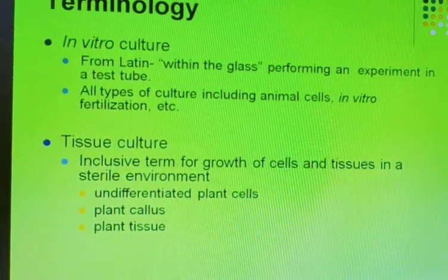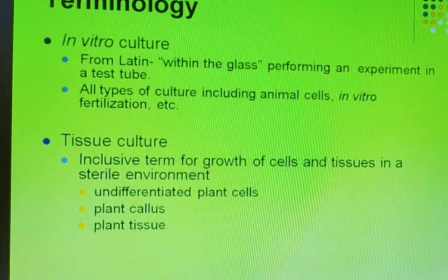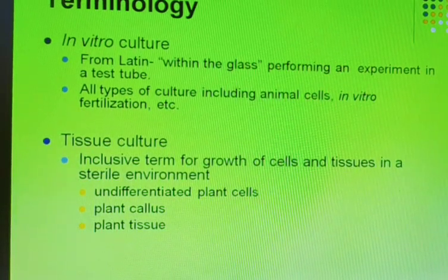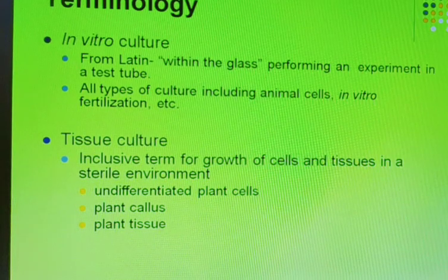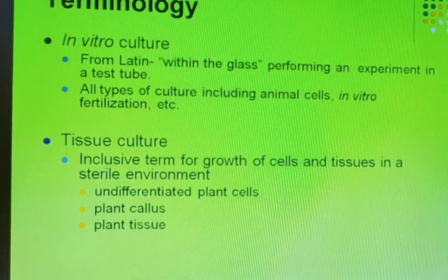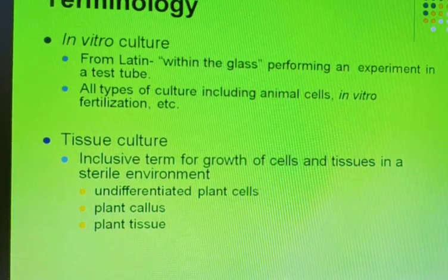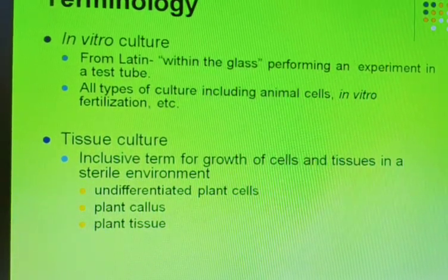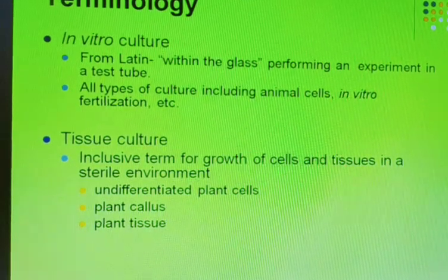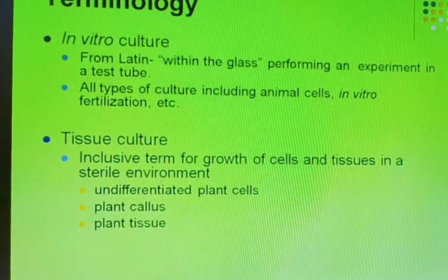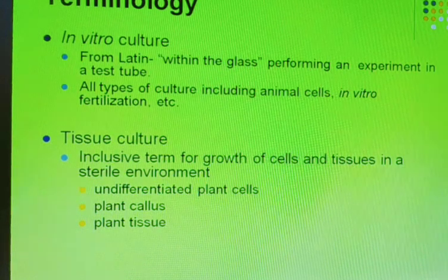The next term is in vitro culture. In vitro means in the tube or in the glass. In the tube or glass, we can regenerate plants, and that is known as in vitro culture. The culture which is grown in tubes is known as in vitro culture.